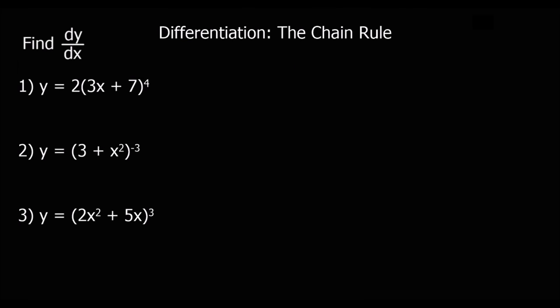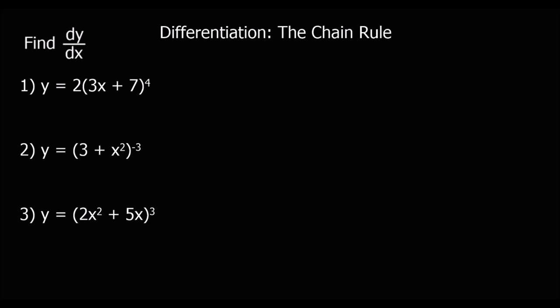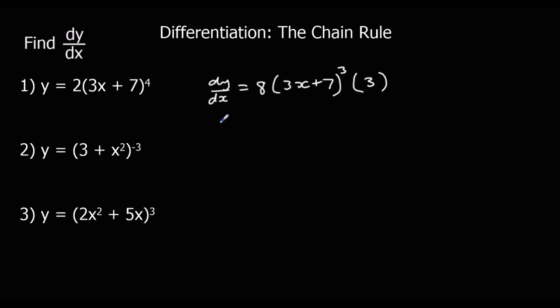Here are some for you to try — pause the video and hit play when you're ready to go through them. The first one: we differentiate around the bracket and then multiply by the bracket differentiated. So dy/dx — multiply by the power, 2 times 4 are 8, take one off the power so down to 3, multiply by the bracket differentiated which is just 3. Simplify: 8 times 3 is 24, so 24 goes on the outside, the bracket stays as it is, and there's our answer.